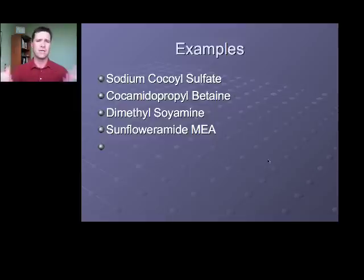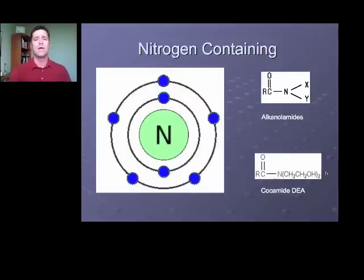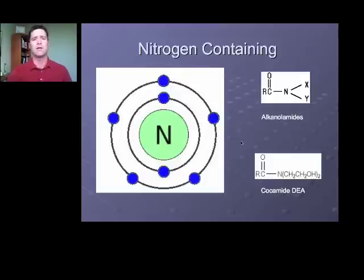Unfortunately, from source-derived names you can't really determine the raw material structure, but it does give you a sense of the fatty acid distribution. You'll also find nitrogen-containing compounds in cosmetic ingredients — anywhere you see 'amide' or 'amine,' you know it's a nitrogen-containing compound. Examples include kokamide DEA and soyamide DEA. These nitrogen-containing compounds are often used in conditioning products, and we'll talk about them in depth later in this program.